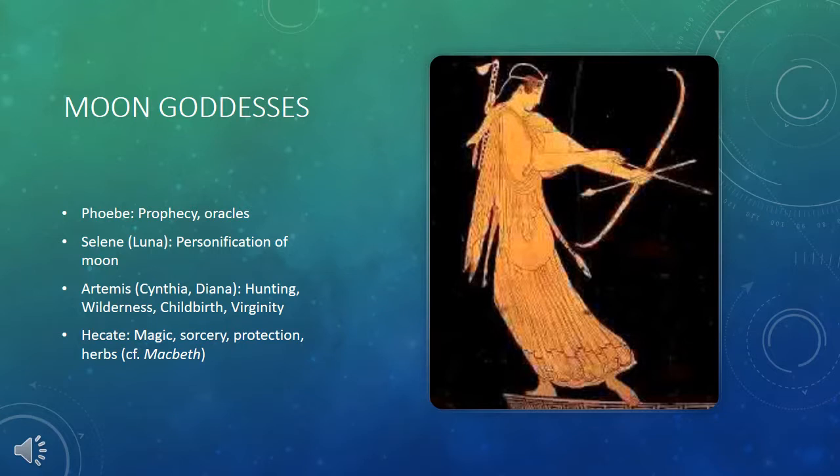The moon is also associated with Artemis, sometimes known as Cynthia, and known in the Roman pantheon as Diana. She is the goddess of hunting, the goddess of wilderness and wild animals, but also the goddess of childbirth and the goddess of virginity. So these goddesses are all associated with virginity, childbirth, and so forth.